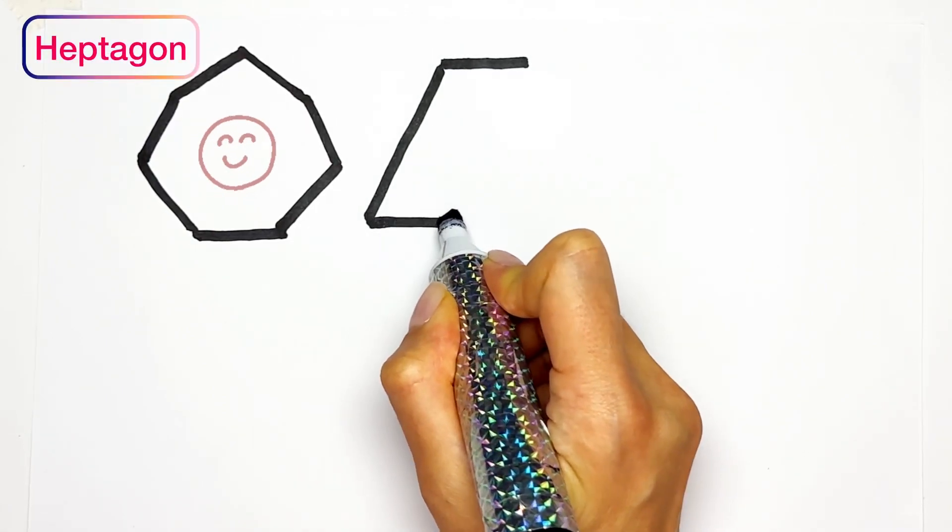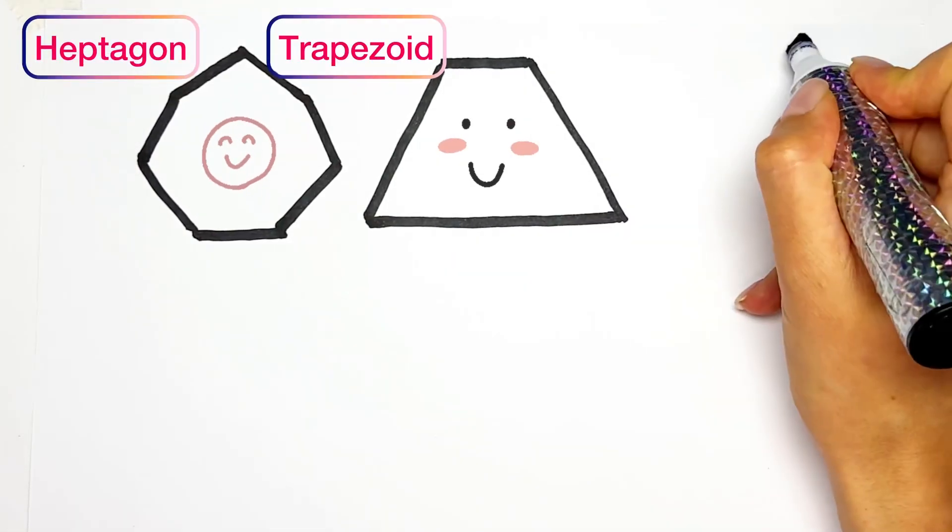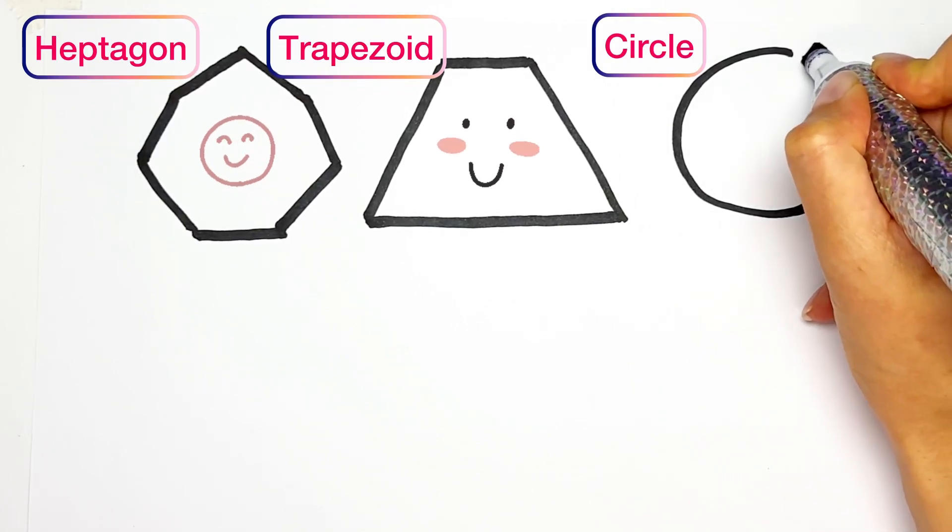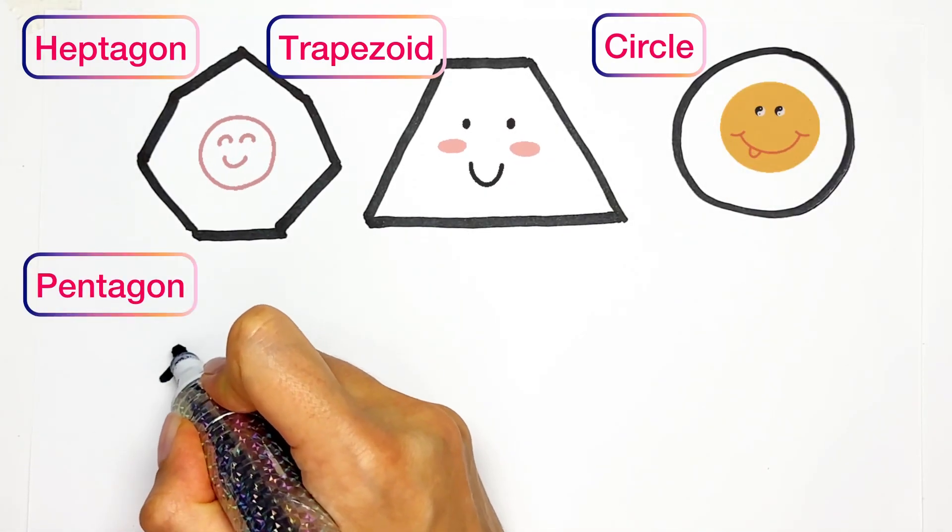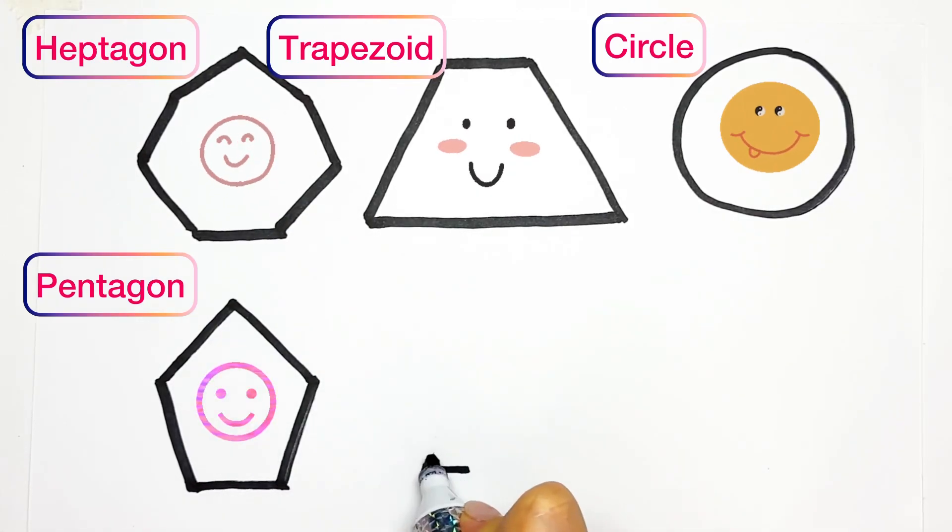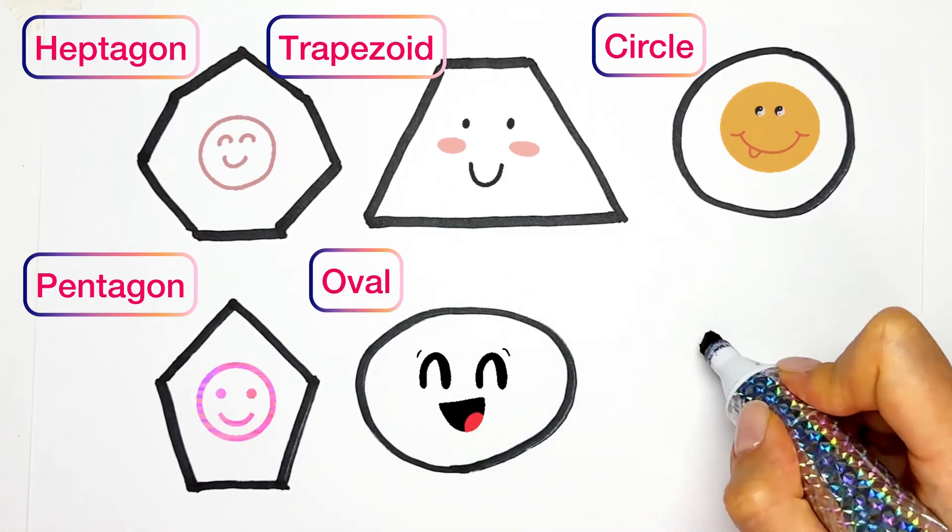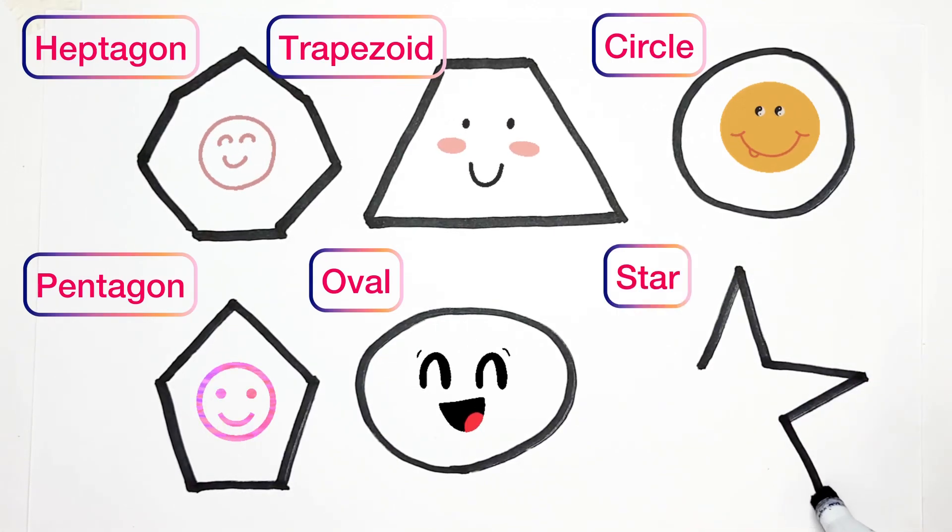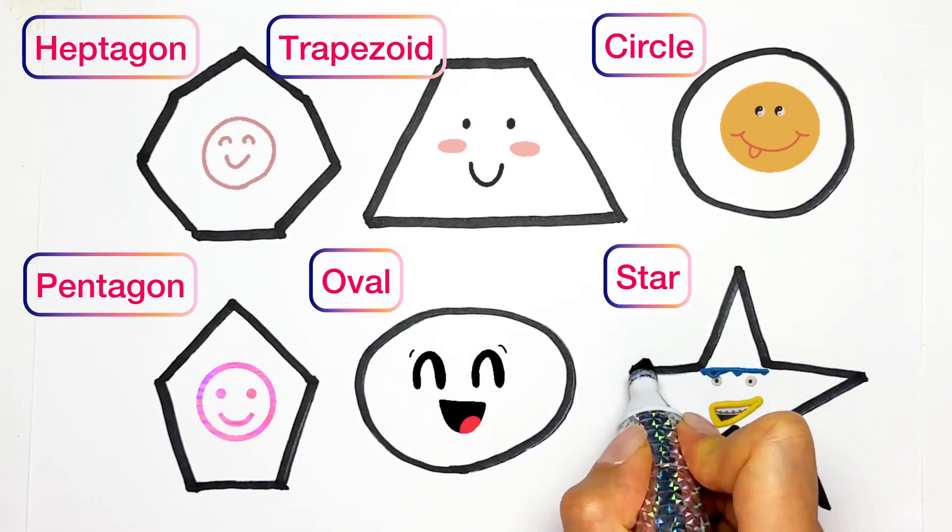The next one is Trapezoid. Circle. Then Pentagon. Pentagon has five angles. Next one is Oval. And Star.